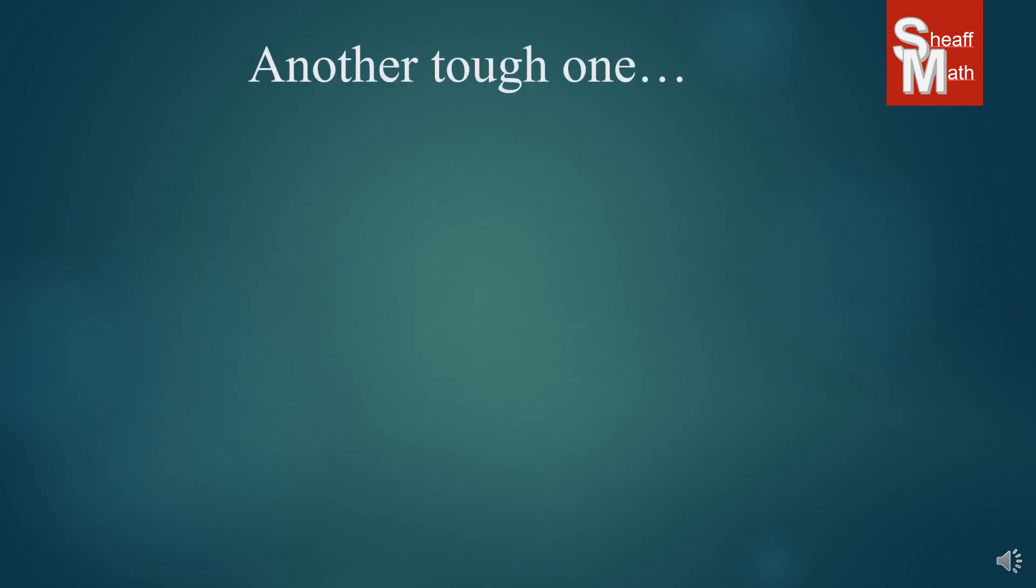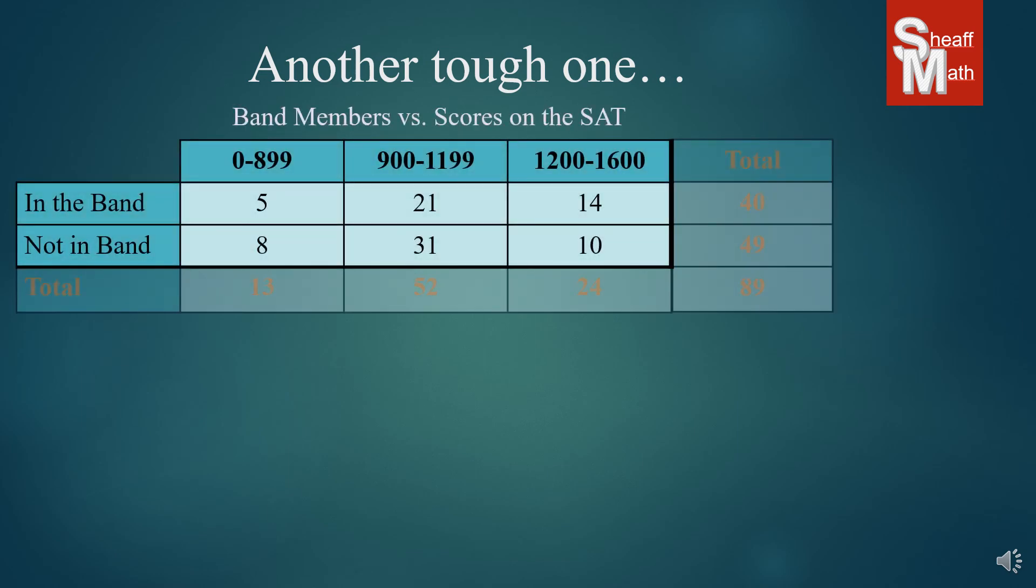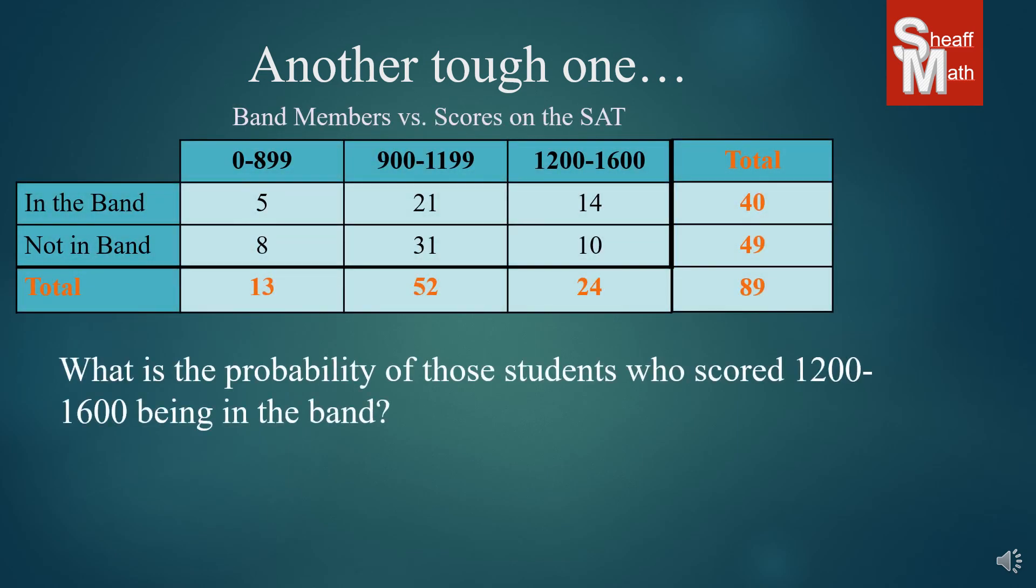Now here's another tough one. This one's a really tough one, not because it's that hard but because you really have to read this question. What is the probability of those students who scored 1200 to 1600 being in the band? Now what's different about this question than all the others is this right here. It doesn't say the probability of all those surveyed. It talks about a specific group. Only the 1200 to 1600 kids are they talking about. So there's 24 kids that were in the 1200 to 1600 range. So this is going to be the total that we're dealing with.